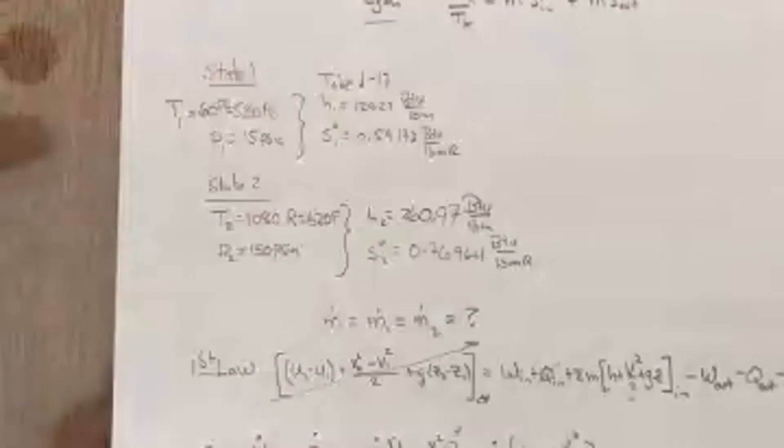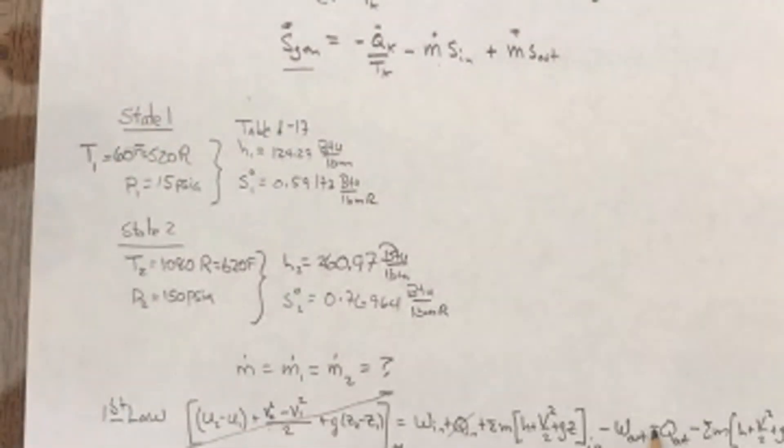Just to reiterate, when we work with the first law, we build the sign convention right in. We have Q in as positive here and Q out as negative here, so we never really worry about it. We just stick in a positive number into those, and the sign is built in.